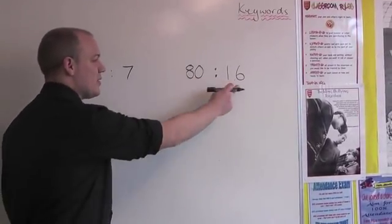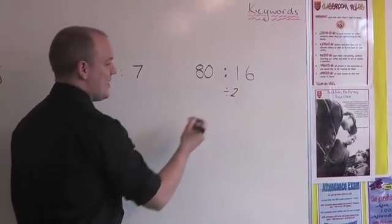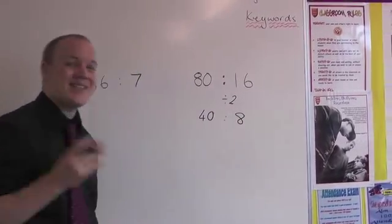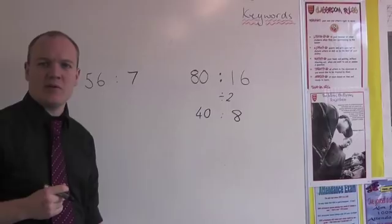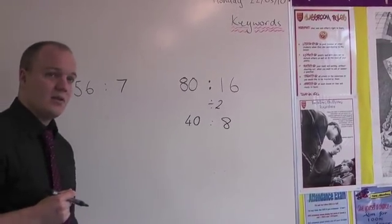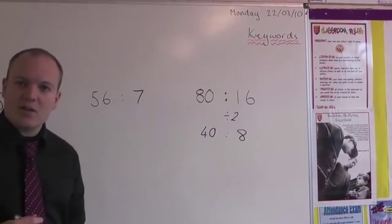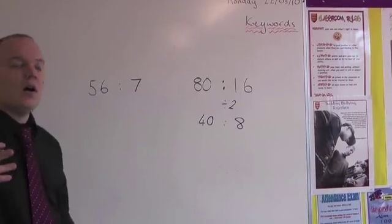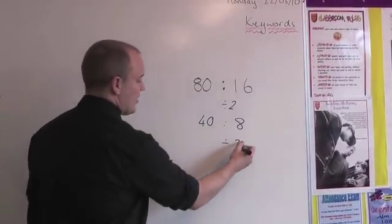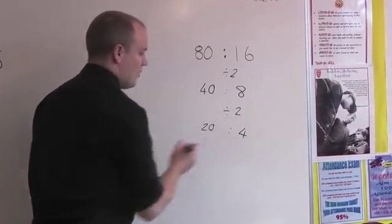Nice and easy — they're both even numbers, so I'm going to divide by 2. I've got 80 divided by 2 is 40. 16 divided by 2 is 8. Now is that as simple as possible? Well, both of those would divide by 2 again. That's exactly what I'm going to do. So you can see how I'm setting it out: 40 divided by 2 is 20, 8 divided by 2 is 4.